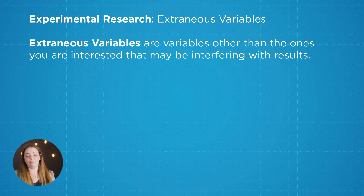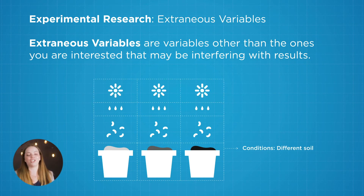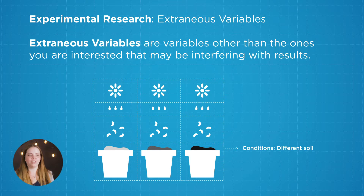The other types of variables that I mentioned here, such as water and sunlight, are called extraneous variables. They're basically any other variable that exists outside of those two variables that could affect your study.